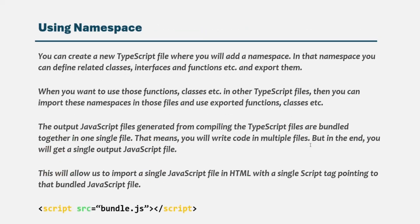The first feasible approach for organizing your TypeScript code is to use namespaces. A namespace allows you to organize your code in multiple files. You create a new TypeScript file where you add a namespace, and in that namespace you can define related classes, interfaces, and functions. When you want to use those functions and classes in another TypeScript file, you can import these namespaces in those files. When we compile the TypeScript code, the output JavaScript files generated are also bundled together into one single file. So we will have multiple TypeScript files, but when we compile them, it will generate a single JavaScript file containing all the compiled TypeScript code. We will not have multiple output files — a single JavaScript file will contain all the TypeScript files' compiled code.